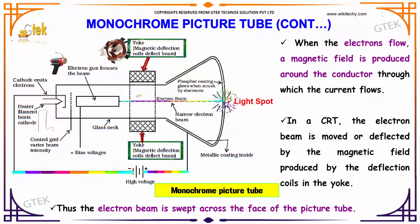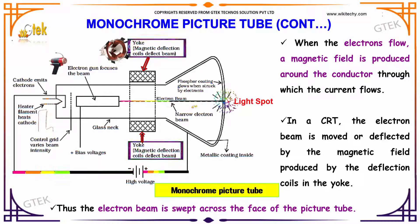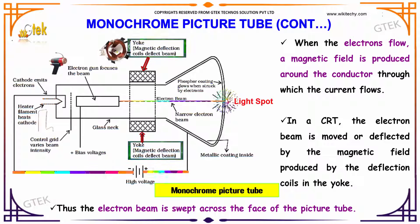When current flows, a magnetic field is produced around the conductor through which the current flows. In a CRT, the electron beam is moved or deflected by the magnetic field produced by the deflection coils in the yoke. Thus, the electron beam is swept across the face of the picture tube.